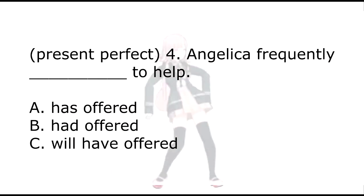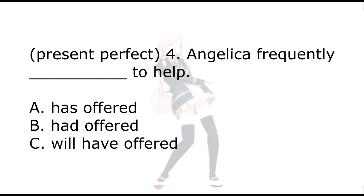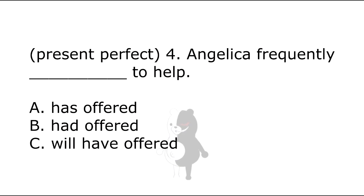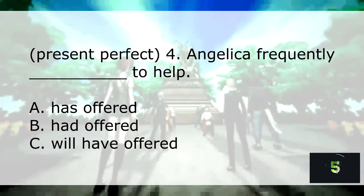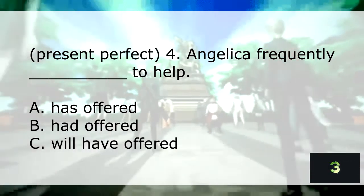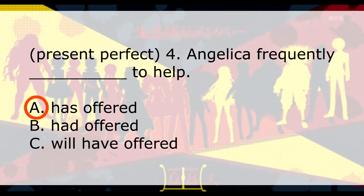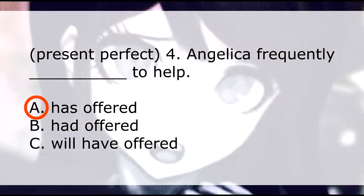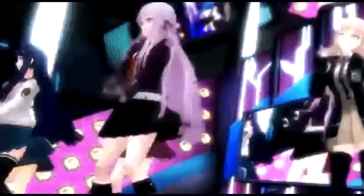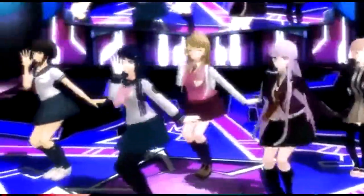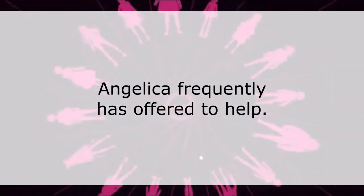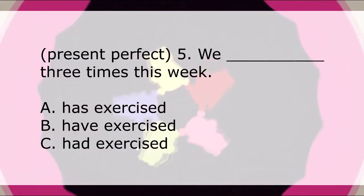Question 4: 'Angelica frequently ___ to help.' You need to choose the verb that's in the present perfect tense to complete the sentence. A) has offered, B) had offered, C) will have offered. If your answer is A, 'has offered,' then you are correct. Angelica frequently has offered to help.